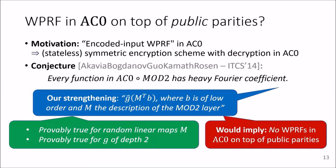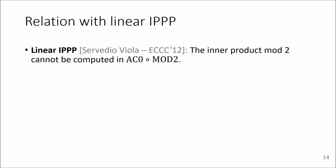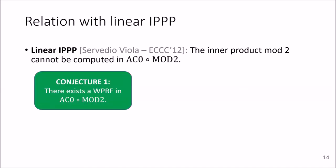Our strengthening would imply that no weak PRF in AC0 on top of public parities with better than quasi-polynomial security can exist. This conjecture together with our weak PRF candidate has also implications to linear IPPP, which is the conjecture that the inner product mod 2 cannot be computed in AC0 on top of parities.